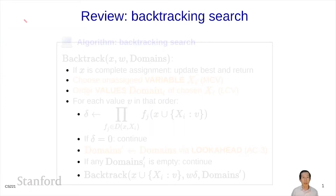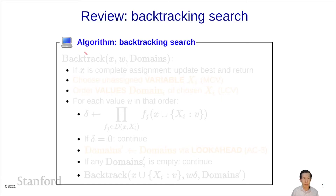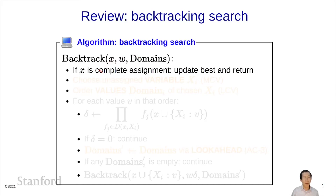First, I want to review backtracking search. Backtracking search is a recursive procedure where it takes a partial assignment x, its weight, and the domains of each of the variables in the CSP. If all the variables have already been assigned in x, then we just see if it's better than the best assignment we've seen so far, and if so, update it, and then we return. This is the base case.